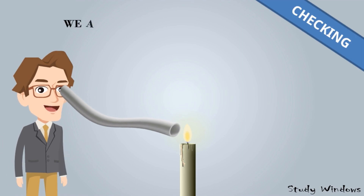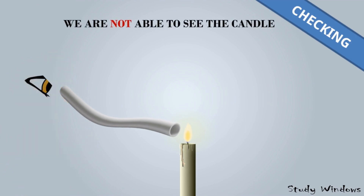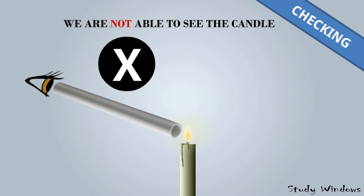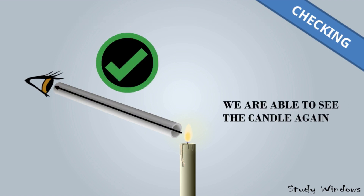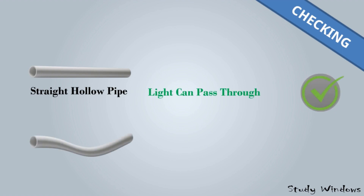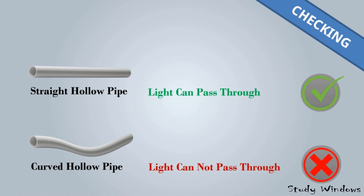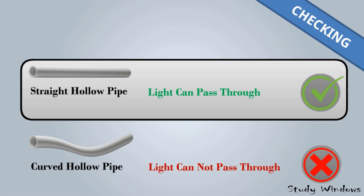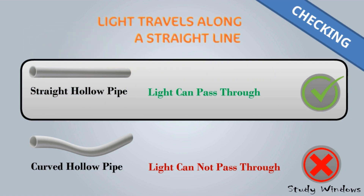Now if we bend the pipe into a curved hollow pipe and try to see the candle, we are not able to see it. This is because light cannot cross the zigzag or curved pipe and cannot reach our eyes. But if we make it straight again, the light comes to our eyes and we can see the candle. So we conclude: light can pass through a straight hollow pipe but cannot pass through a curved hollow pipe — light travels along a straight line only.